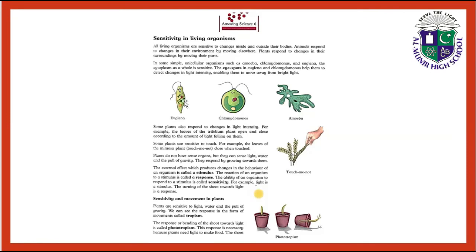This is the eye spot in euglena and chlamydomonas. This red colored eye spot helps them to detect change in light intensity, enabling them to move away from bright light or move towards it. They are sensitive to light intensity.